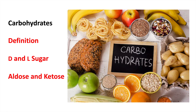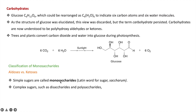Today we will study carbohydrates — covering its definition, D and L sugars, aldoses and ketoses. Carbohydrates are widely abundant in nature and can be found in food products, fruits, wood of plants, and in our DNA. The simplest carbohydrate is glucose.